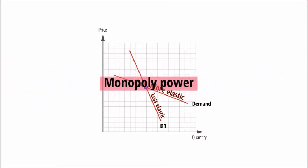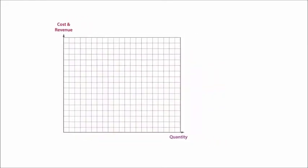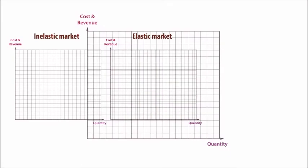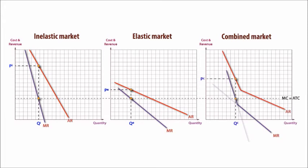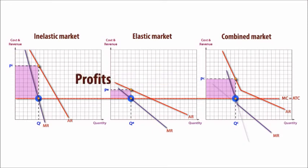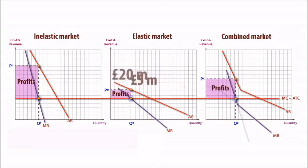Evaluating price discrimination from a firm's perspective, it enables profit to be maximized. Diagrammatically, in the less elastic sub-market the demand curve is steeper and profit is maximized at a higher price; when demand is more elastic, price will be lower. When sub-markets are combined, price will be between the two prices. If we assume marginal cost is constant across all sub-markets, profits are maximized where marginal cost equals marginal revenue. Profits from separating the market at 25 million pounds are greater than from combining the market at 22 million.